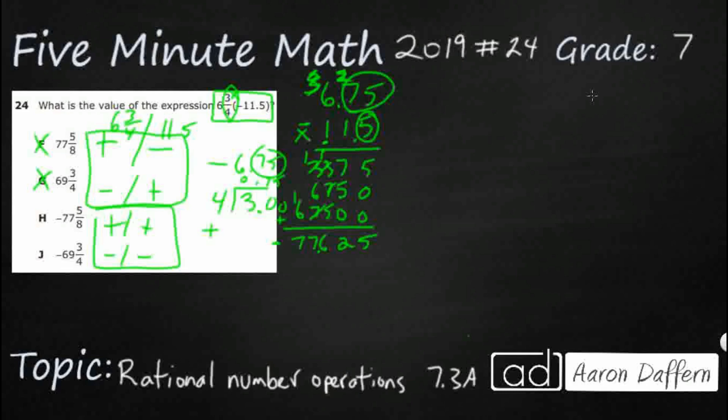Now, we only have this 5 eighths in the answer choices. But this is actually negative 77 and 625 over 1,000, because that's in the thousandths place. That's pretty big. But if you know your eighths, if you divide both by 125, because that's what your eighths are going to be, that actually is going to get you 5 eighths. So it's going to be negative 77 and 5 eighths.